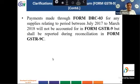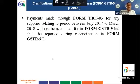The last point from the CBIC press release: payments made through form DRC-03 for any supplies relating to the period July 2017 to March 2018 will not be accounted for in form GSTR 9 but shall be reported during reconciliation in form GSTR 9C.